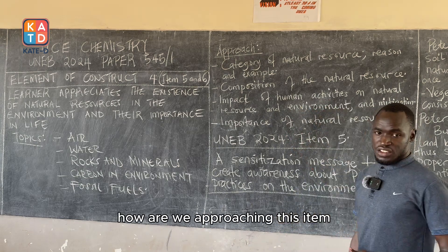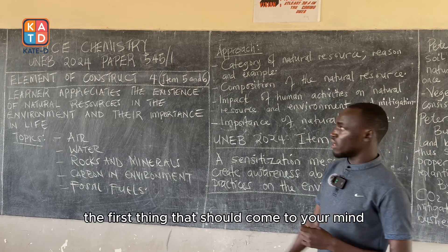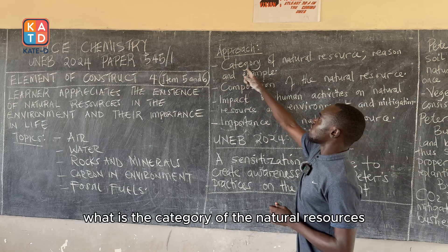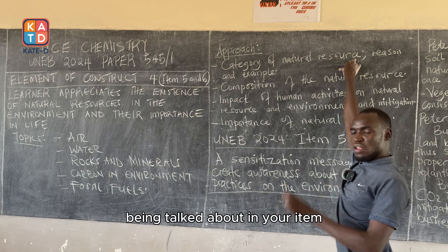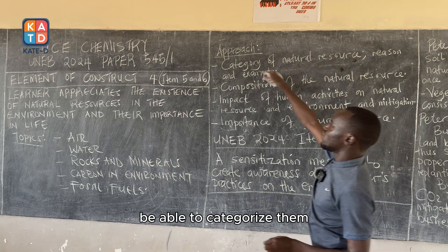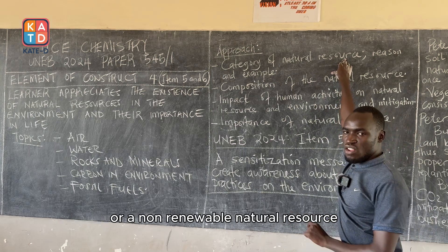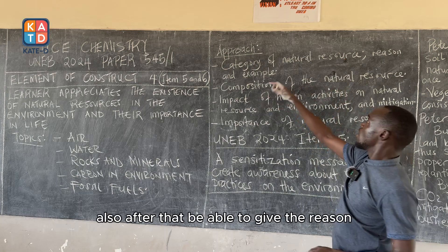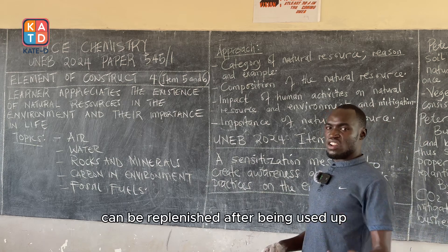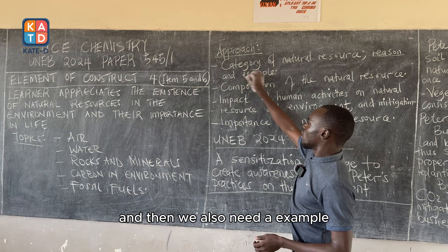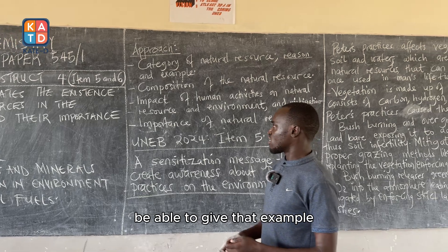When approaching items about natural resources, the first thing that should come to your mind is to read through your item carefully and check what category of natural resources they are talking about. Look for the natural resources being mentioned and categorize them — it is either a renewable or a non-renewable natural resource. After that, be able to give the reason why you are calling it renewable: it can be replenished after being used up. Then give an example of a renewable natural resource.